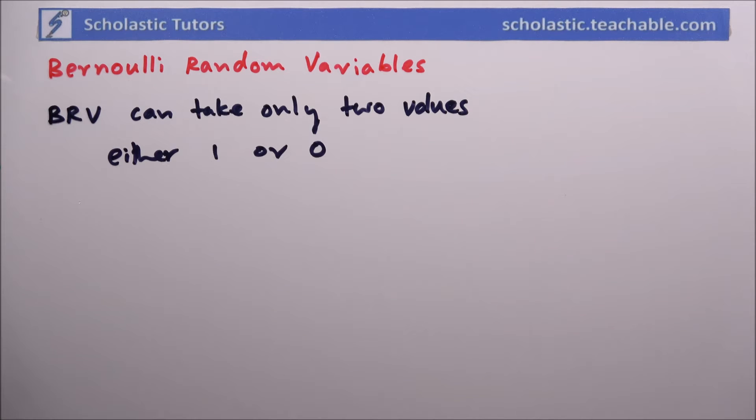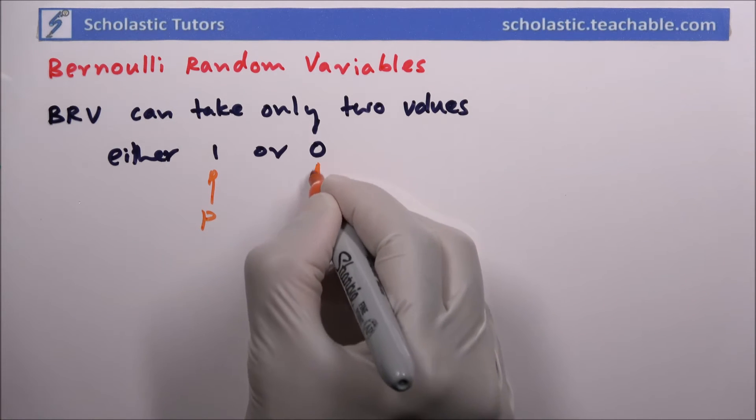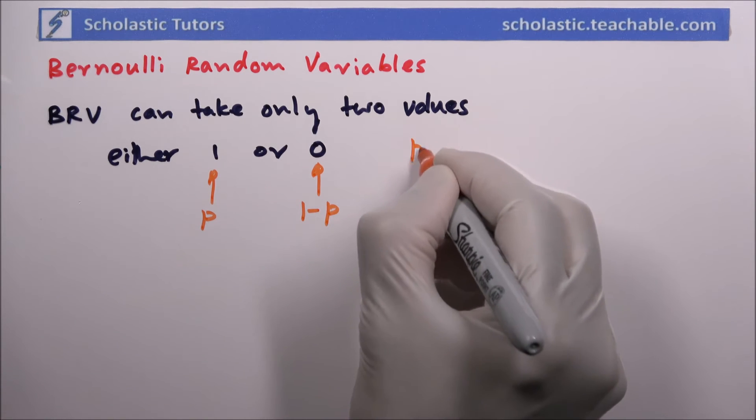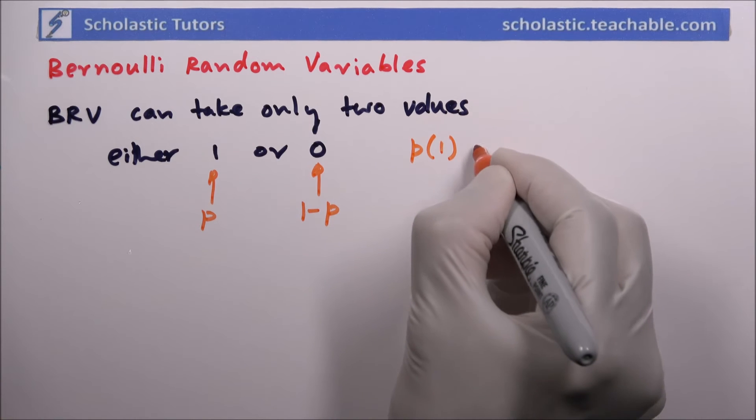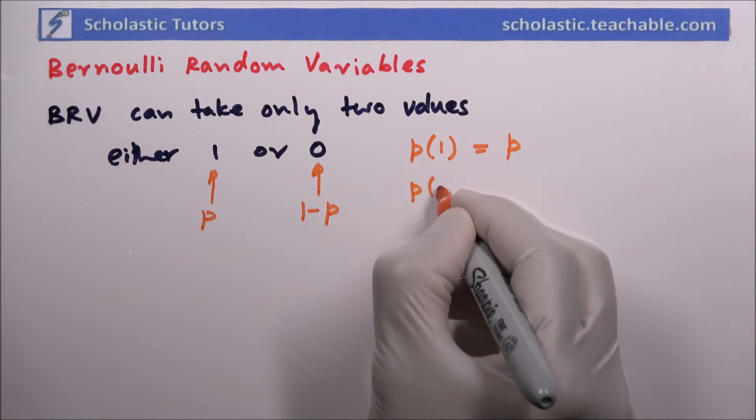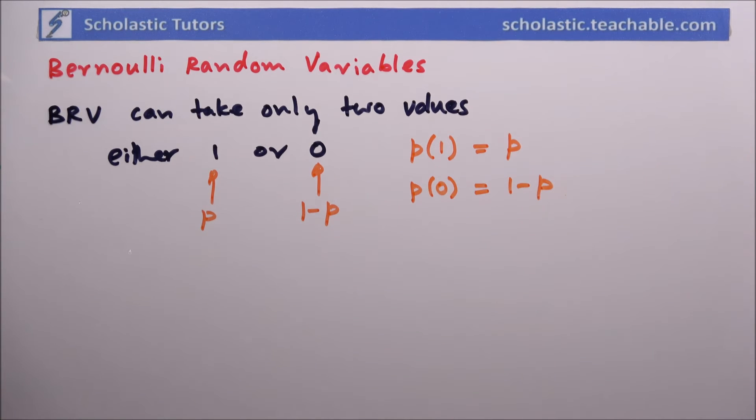We can assume that one has probability p, and zero will occur with probability one minus p. That means the probability of one is equal to p, and the probability of zero is one minus p.